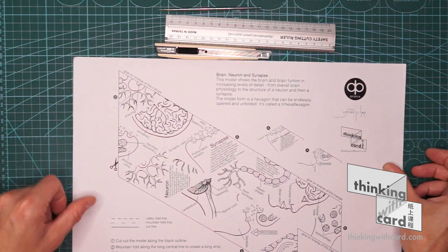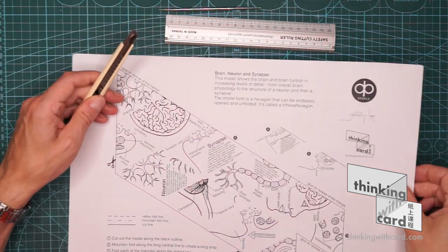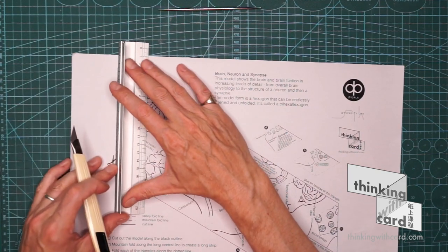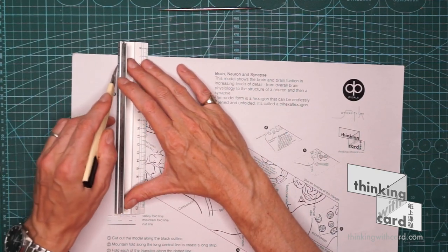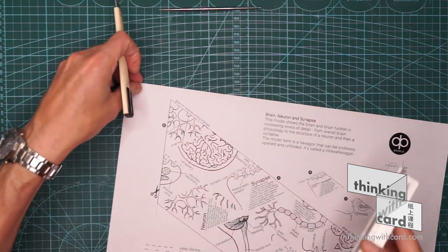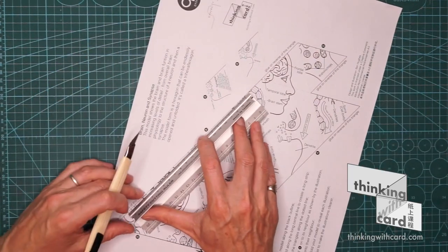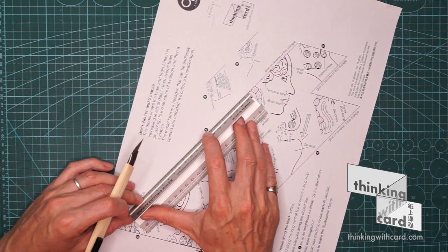Here it is printed black and white on A3 paper. The first thing to do is cut it out. Cut it out with scissors or a knife. Here I'm using a snap-off knife, a cutting mat and a metal ruler.